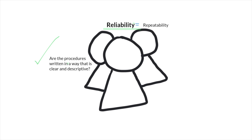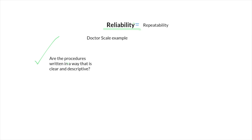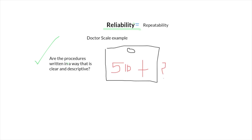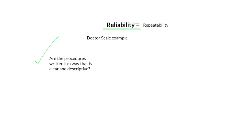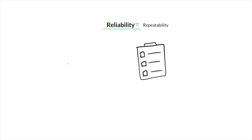It's important to note that you may have data that has repeatability but not accuracy. Take the doctor scale example — if we went to the doctor again and again and it was consistently five pounds over the scale at home, this would still be reliable, although it's not accurate. We want to make sure we are writing our procedures in a clear and concise way, with step-by-step instructions that can be easily followed in the future.